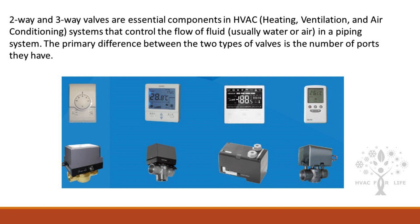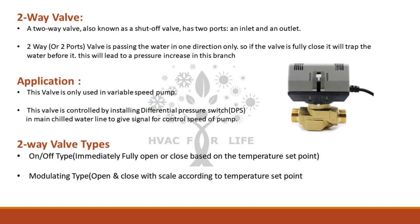The primary difference between the two types of valves is the number of ports they have. A two-way valve, also known as a shut-off valve, has two ports: an inlet and an outlet. A two-way valve passes water in one direction only, so if the valve is fully closed it will trap the water before it, leading to a pressure increase in that branch.